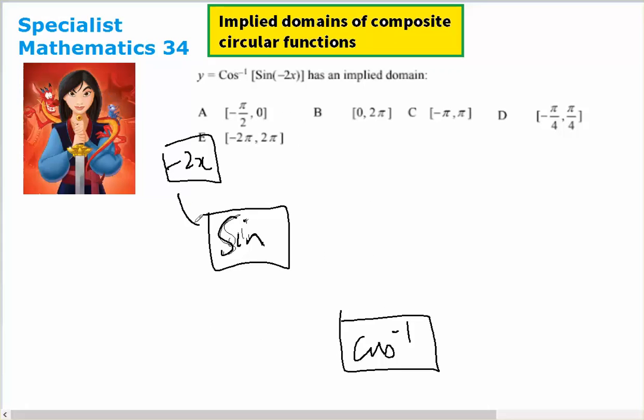What would go into a sine is minus π over 2 to π over 2 inclusive. What would come out of a sine is negative 1 to 1.